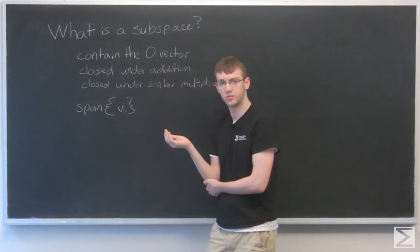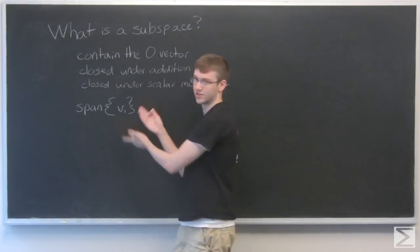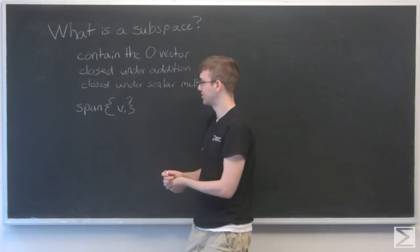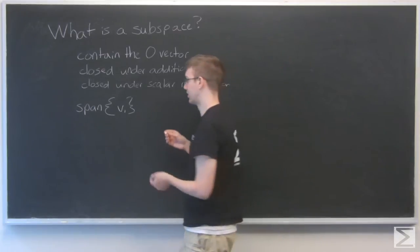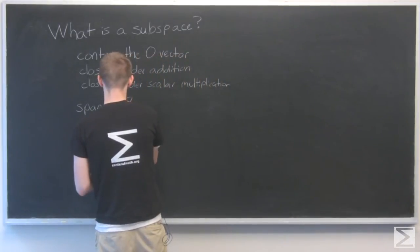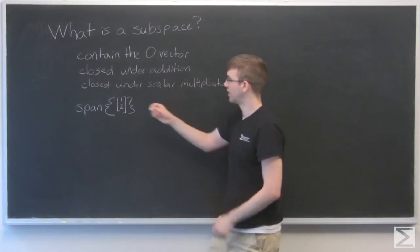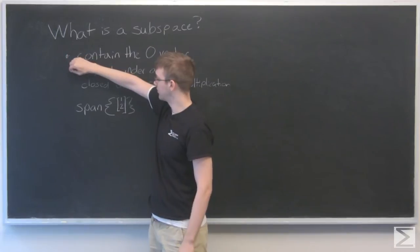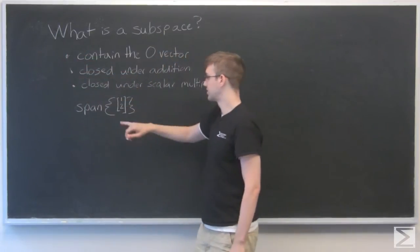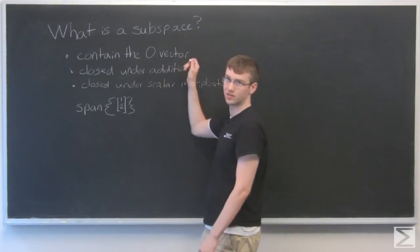So in another video, we talked a bit about what span means. That just means all the linear combinations of whatever's inside these brackets here. If that's just a single vector, say v1 is 1, 2. So does it satisfy these three rules? Because a span is all the linear combinations, so we can just multiply that by zero. So yes, it contains a zero vector.